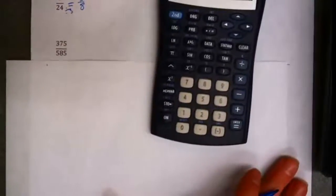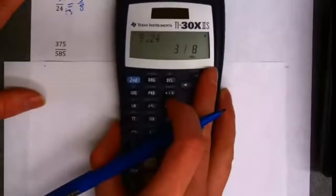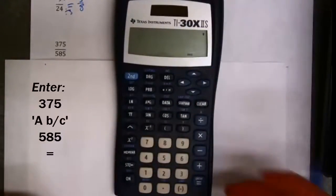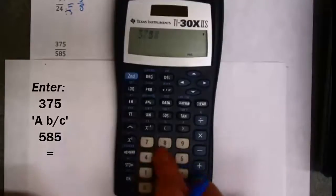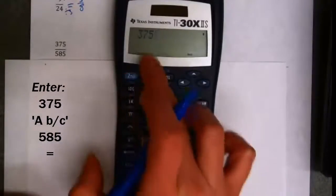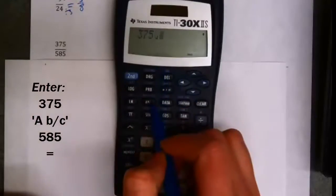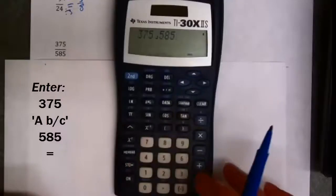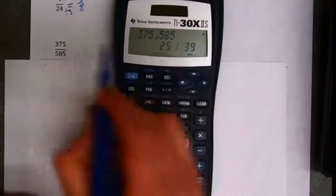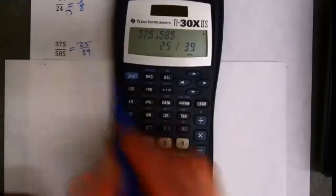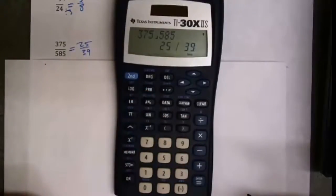Here's where it comes in really handy. What's the reduced form of 375 divided by 585? I don't really want to sit here all day finding common factors. So if I take 375, hit my fraction button, 585, it reduces it to lowest terms for me, 25 39ths. So that's very convenient.